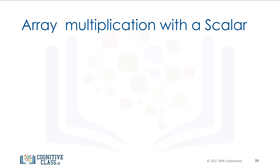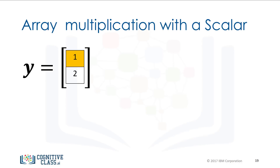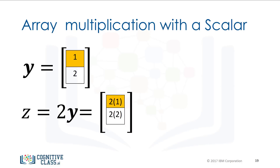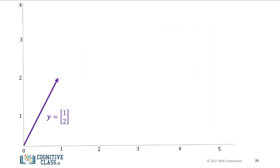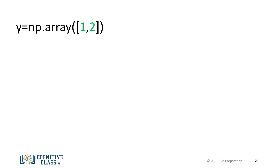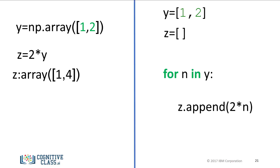Vector multiplication with a scalar is another commonly performed operation. Consider the vector y, where each component is specified by a different color. We simply multiply the vector by a scalar value, in this case two. Each component of the vector is multiplied by two, so each component is doubled. We can visualize this with arrows: the original vector y is in purple, and after multiplying by a scalar of two, the vector is stretched out by two units, shown in red. Vector multiplication with a scalar only requires one line of code using NumPy, whereas it would require multiple lines with Python lists and would also be much slower.